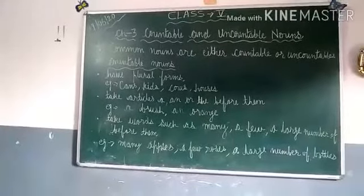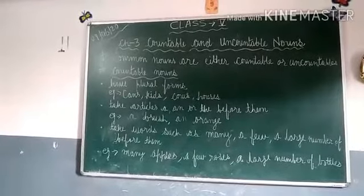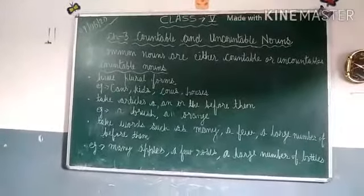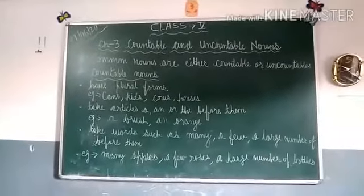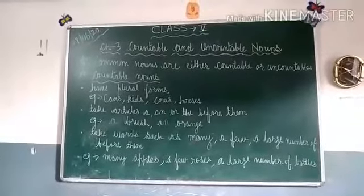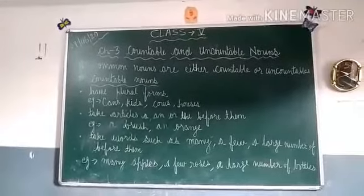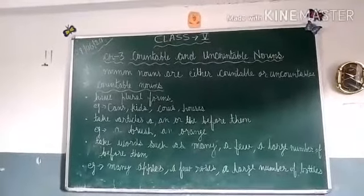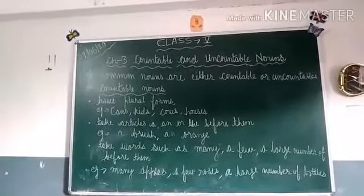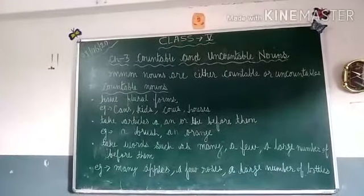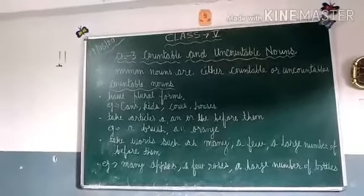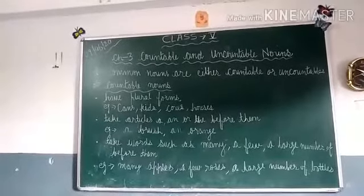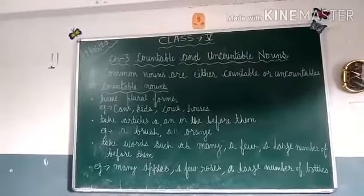Next point: the words such as 'many,' 'a few,' and 'a large number of' come before countable nouns. If we have a countable noun, to us ke pahle many, a few, a large number of will come. Examples: many apples, a few roses, a large number of bottles. We can say many apples, a few roses, a large number of bottles.